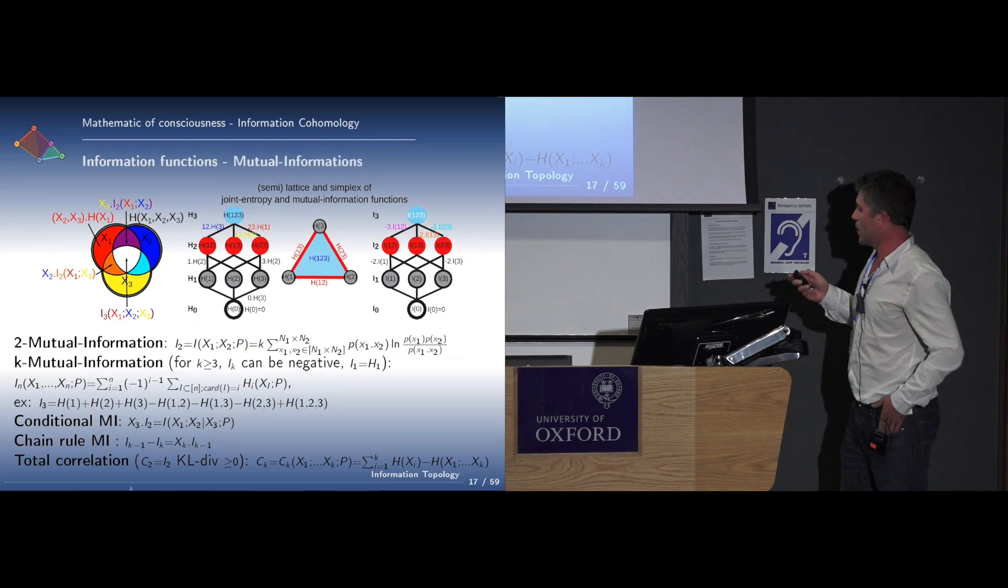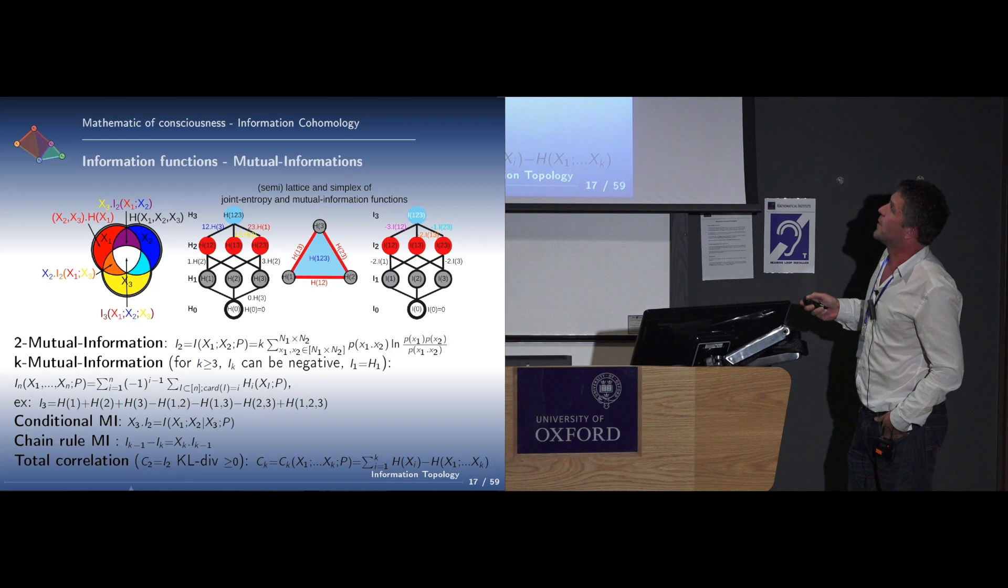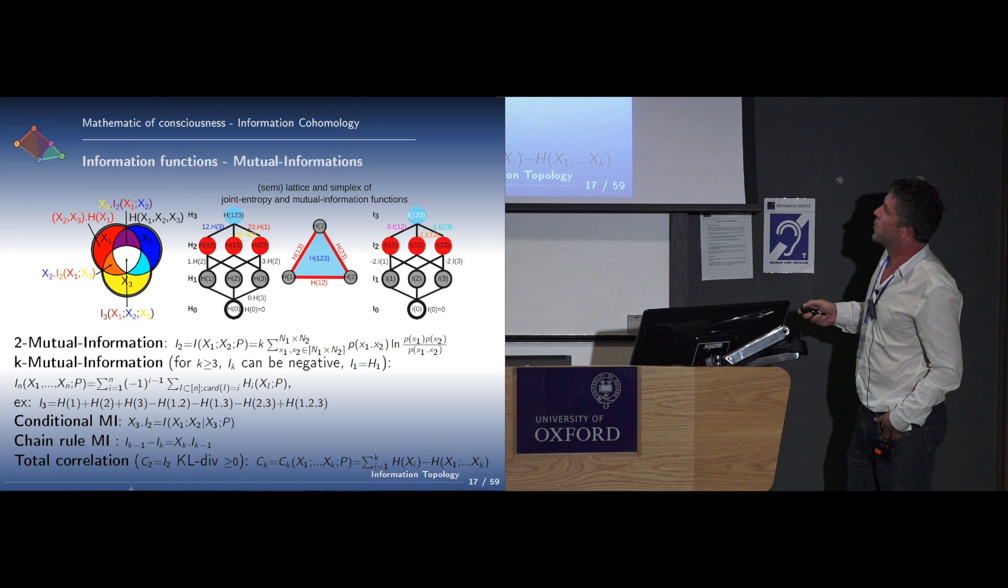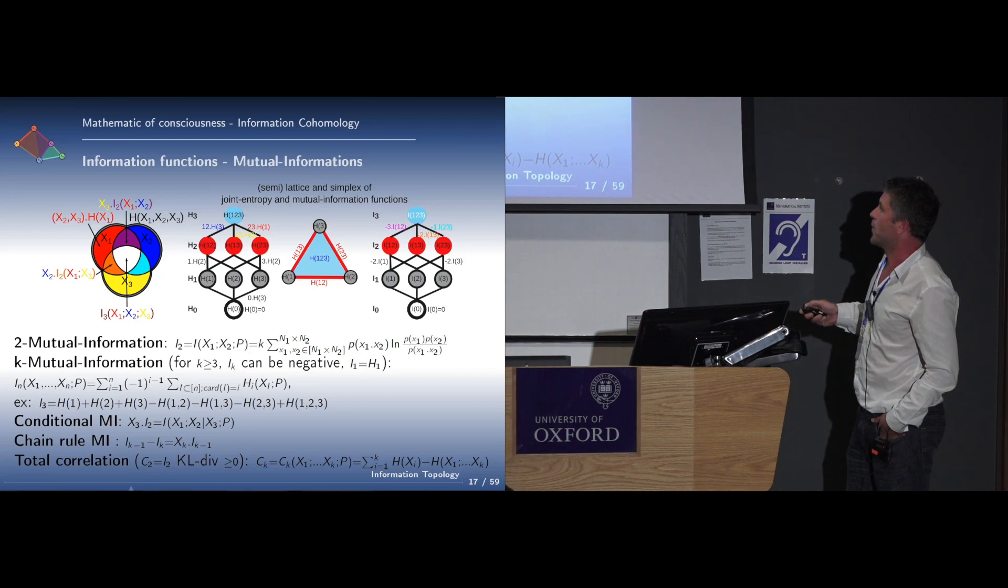The other functions we are interested in are the mutual information for pairs, which is exactly the same but with the intersections. The pair mutual information is defined as usual, but they are generalized to the multivariate k-dimensional case by an alternating sum of the entropies. For example, the mutual information between three variables equals the sum of the marginals minus the sum of the pairs plus the triplets.